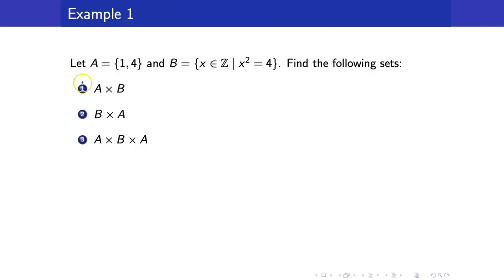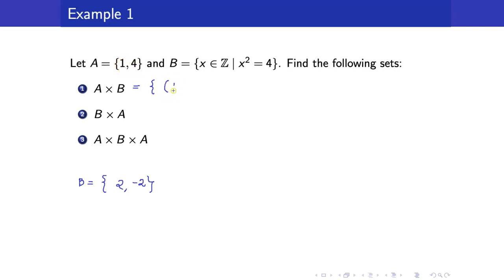Here is an example. Suppose that A is a set containing 1 and 4, and B is a set of all x such that x squared is equal to 4. Therefore, our B will just be the set {2, negative 2}, and therefore A cross B is the set of all possible ordered pairs. These are the elements of A cross B.